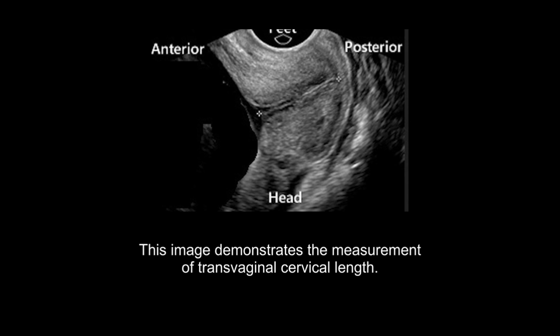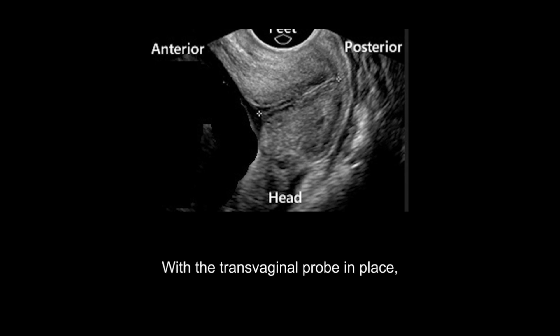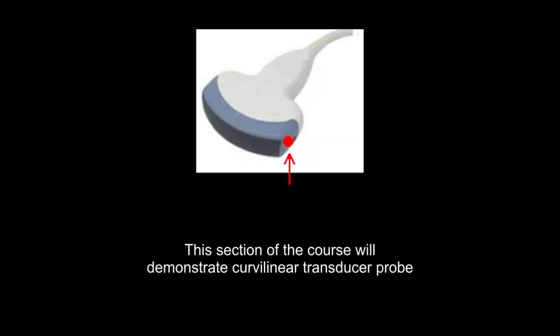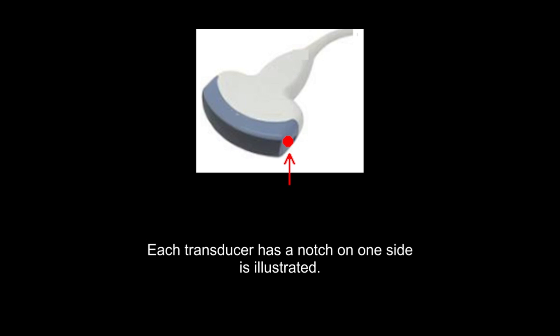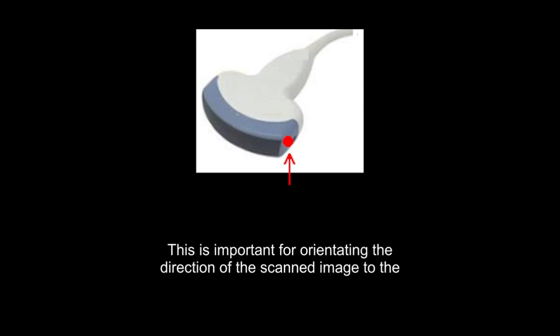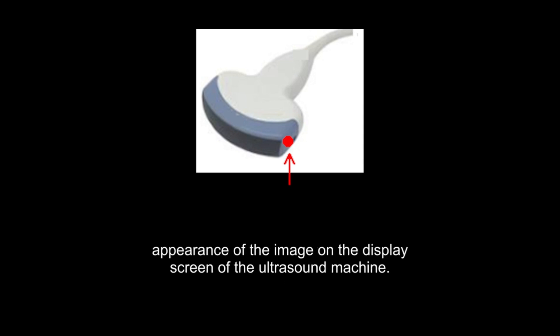This image demonstrates the measurement of transvaginal cervical length. With the transvaginal probe in place, the maternal feet and head orientation can be shown. This section of the course will demonstrate curvilinear transducer probe placement on the maternal abdomen. Each transducer has a notch on one side, which is important for orientating the direction of the scanned image to the appearance of the image on the display screen of the ultrasound machine.